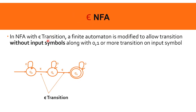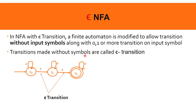Now we have epsilon NFA. In NFA with epsilon transition, a finite automaton is modified to allow transitions without input symbols, along with zero, one, or more transitions on input symbols. Normally we say zero, one, or more transitions on input symbols — but in epsilon NFA, a transition without input symbols is also possible. For example, from Q0 without any input I can move to Q1, then to Q2. These transitions without input symbols are called epsilon transitions.